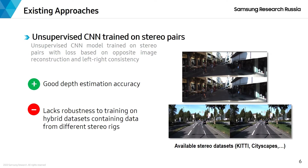Finally, the approach which we use as a baseline is unsupervised CNN trained on stereo pairs. In this approach, the CNN model is trained on stereo pairs with losses based on opposite image reconstruction and left-right consistency. This approach provides good depth estimation accuracy compared to unsupervised CNN trained on video sequences, but it lacks robustness to training on hybrid datasets containing data from different stereo rigs.